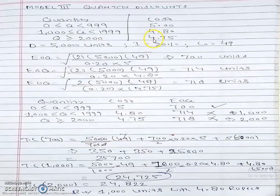Similarly, EOQ for the third unit cost of 4.75 is 718 units. From these three values, I make another column mentioning quantity, cost, and EOQ. For unit cost of 5 rupees, ordered quantity is 700; for 4.80 rupees, it's 714.